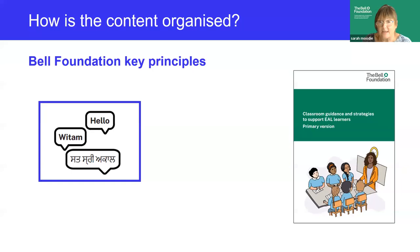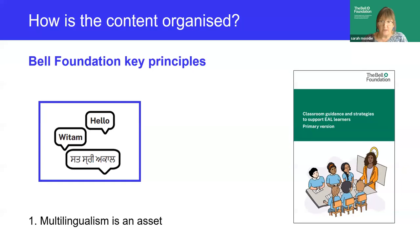The guidance and strategies are organised to align with the Bell Foundation's five key principles, in order to make our offer to schools coherent with our fundamental core values. You'll find strategies which help reinforce our first key principle: that multilingualism is an asset. There's plenty of research around the crucial role a learner's home language plays in their sense of identity and wellbeing, as well as developing greater cognitive flexibility and ultimately stronger academic performance.